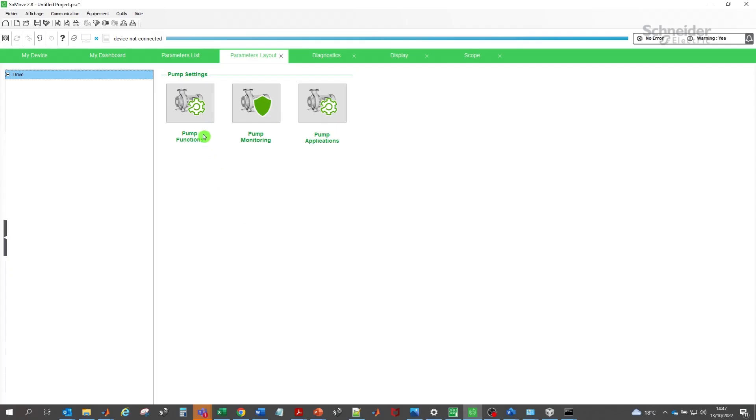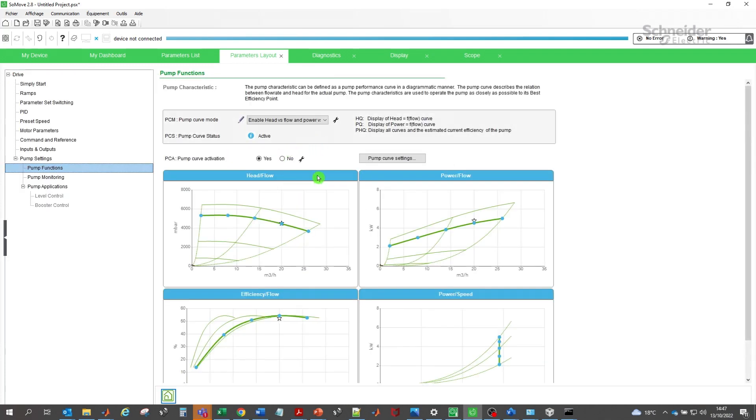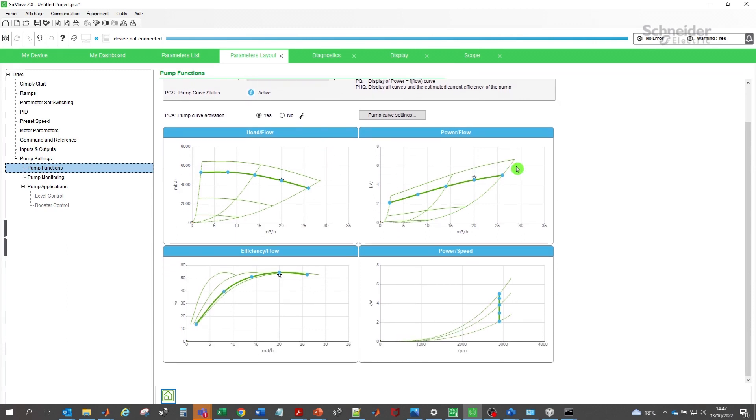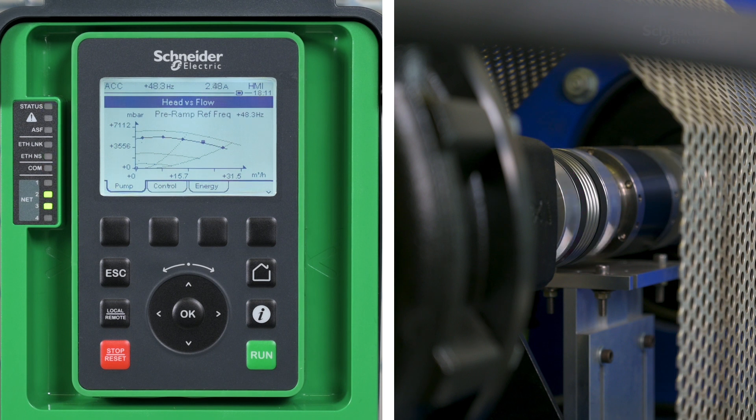If you want to visualize several curves at the same time, you must use SoMove or the web server. In the parameters layout tab, you can display the four curve screens. We start the pump and see that the operating point is close to the BEP. In our example, the head starts at zero.